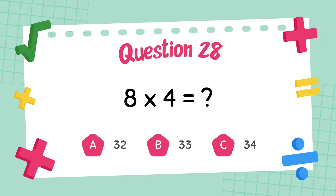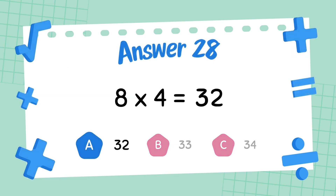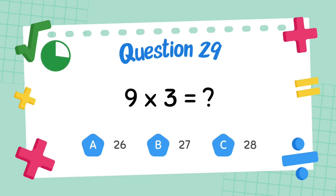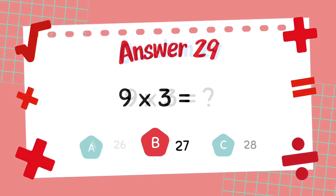What is 8 multiply 4? The answer is 32. What is 9 multiply 3? The answer is 27.